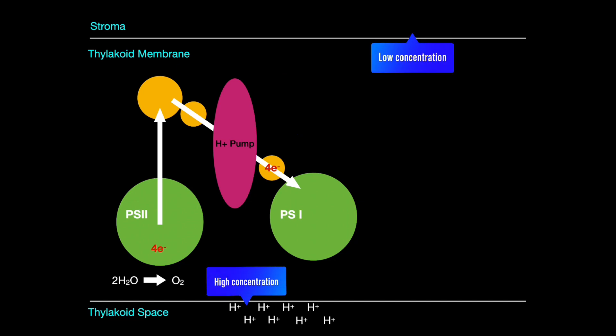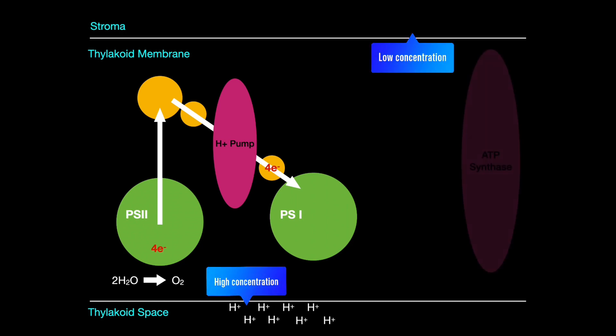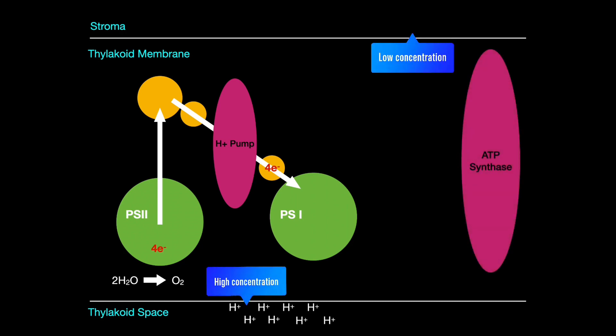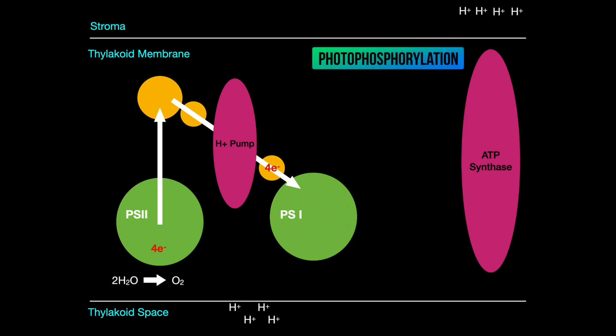As the hydrogen ions are now at a high concentration in the thylakoid space, they then passively diffuse back into the stroma via ATP synthase. This enzyme is a protein found within the thylakoid membrane. This results in the phosphorylation of ADP to form ATP. As the energy to drive chemiosmosis ultimately comes from light, we can refer to this as photophosphorylation.